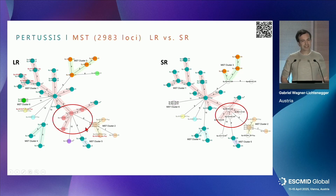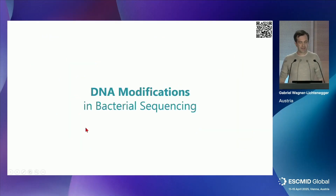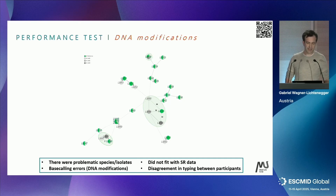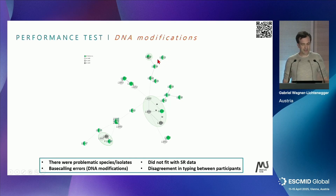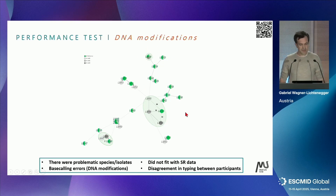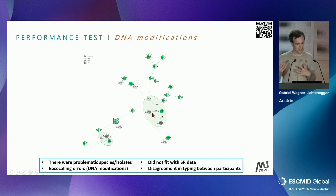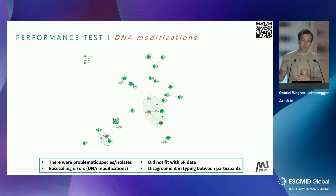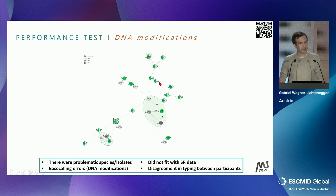That was pretty good and we were really excited. But then reports came up that this is not always the case — this is related to DNA modifications. We also ran a multicenter study analyzing different species. For Listeria, the short read data in the tree is in green and the long reads are in gray. Most of the time this works pretty well, but there are certain isolates where the long read data doesn't match the short reads or even each other. We traced that back to DNA modifications, which also explains why some people, even within the same species, were reporting very good results while others said this is not working.